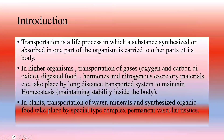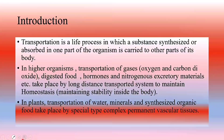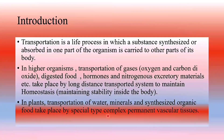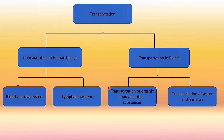In plants, transportation of water and minerals — that is known as sap — takes place via xylem through conducting channels called tracheids and vessels. Similarly, transportation of synthesized organic food takes place through conducting channels called sieve tubes, which are present in phloem. So in plants, transportation of water, mineral, and synthesized organic food takes place through the complex permanent vascular tissue — xylem and phloem.